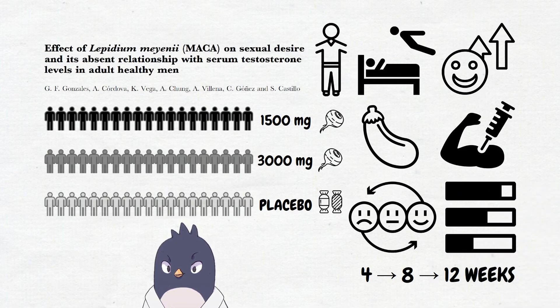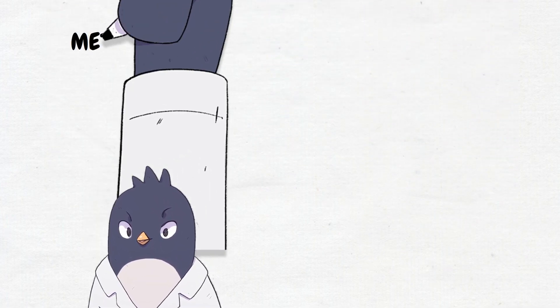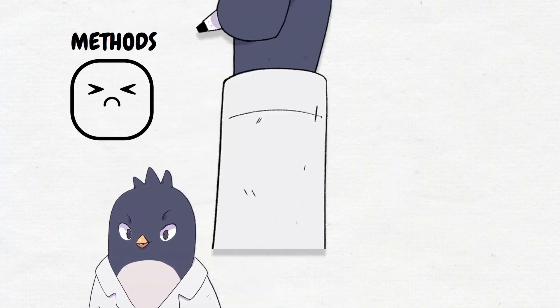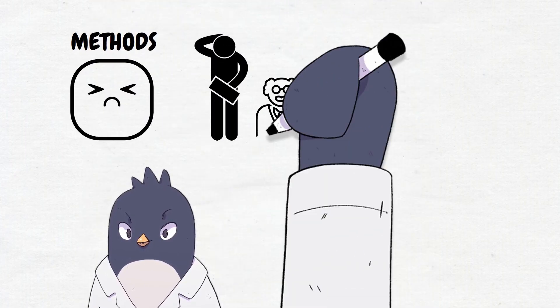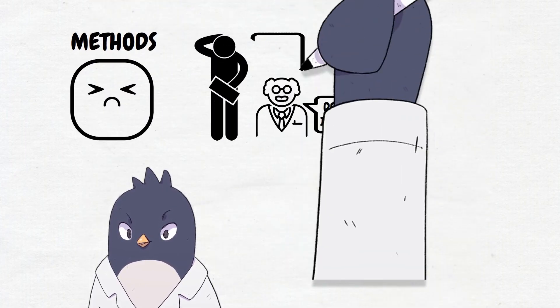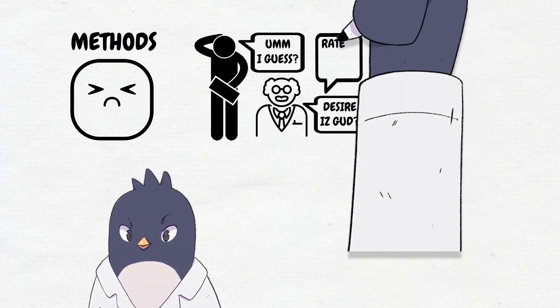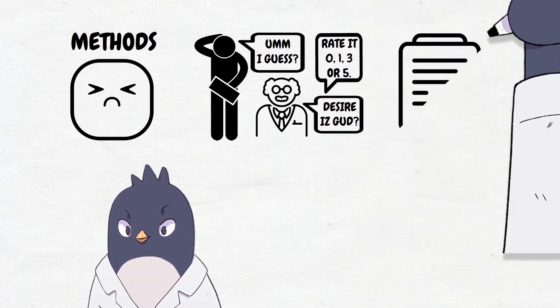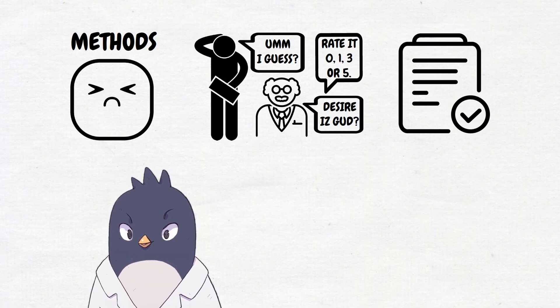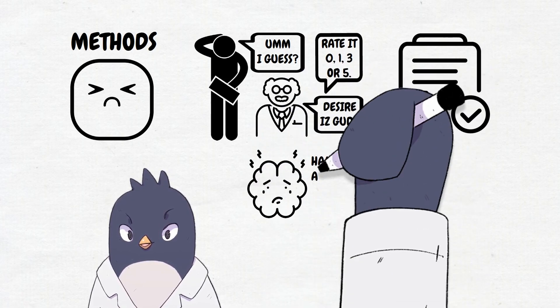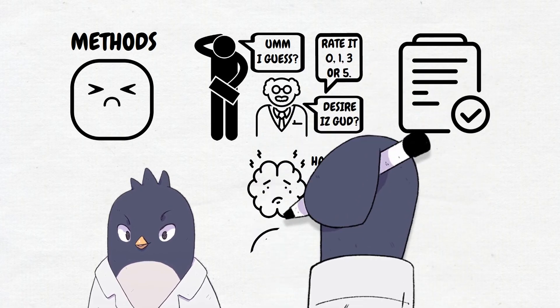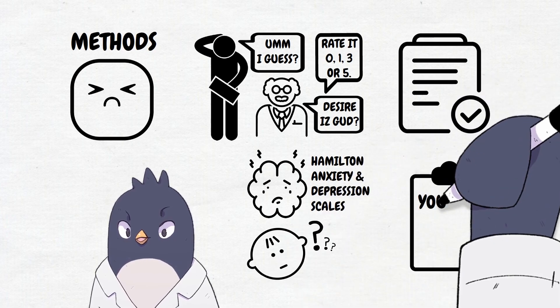It's obvious a lot of effort went into this trial with how much data they collected, but honestly the methods were a little marginal, especially in how they assessed sexual desire. They basically just asked them a single question about how their desire changed and measured it on a weird scale. It would have been way better to use a nice validated scale of some kind like they did for anxiety and mood with the Hamilton anxiety and depression scales. Why not use a validated scale for the main thing you're looking at?